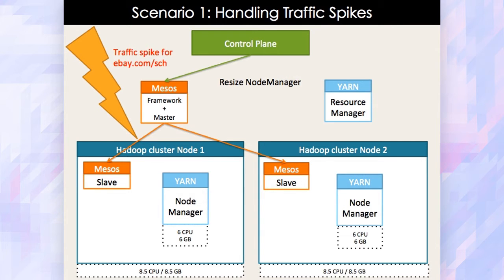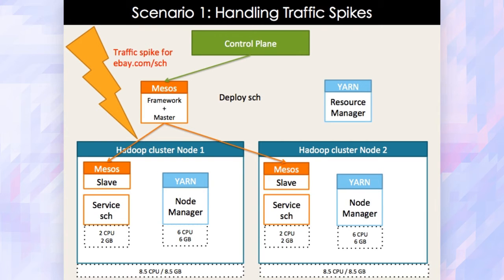The control plane basically gets signals from the monitoring system and tells Mesos to vertically scale down the node managers running on the Hadoop nodes, so that we can create spare capacity for deploying the A-link service which is under load. Once that is done, we can deploy the A-link service, and eBay.com survives the traffic spike.